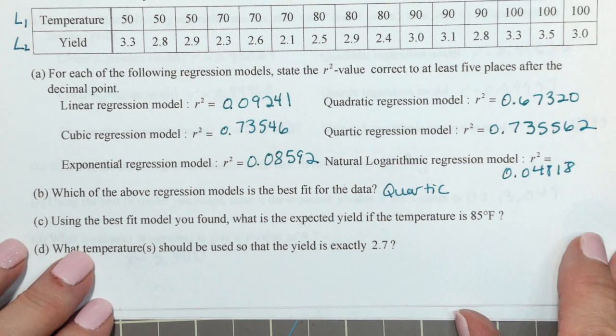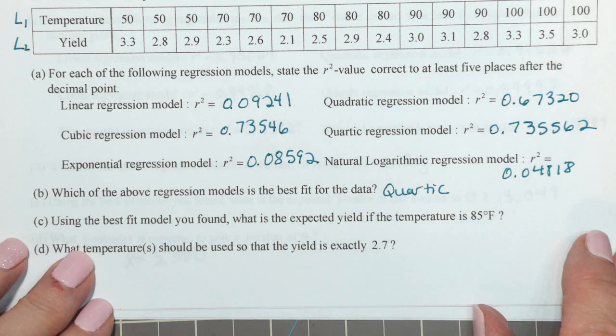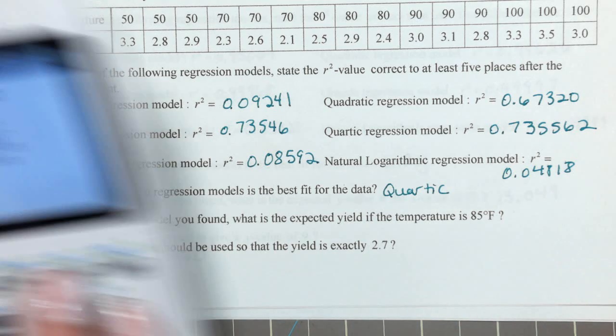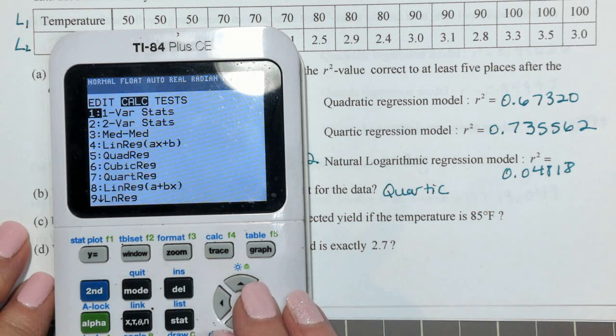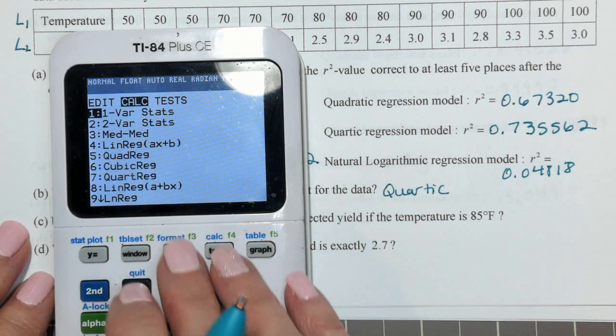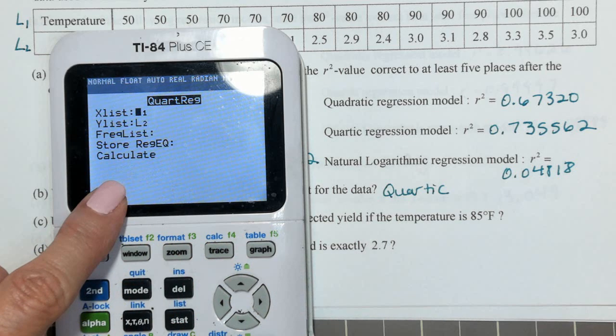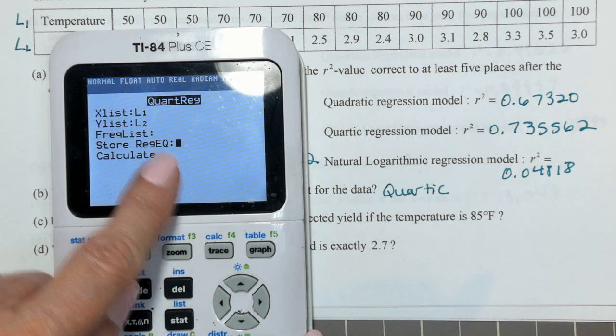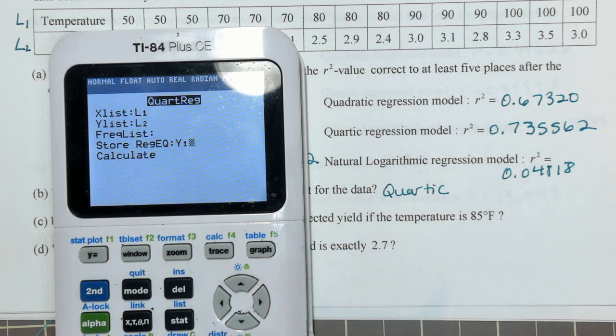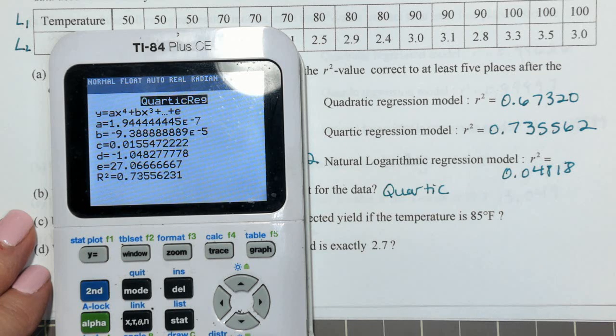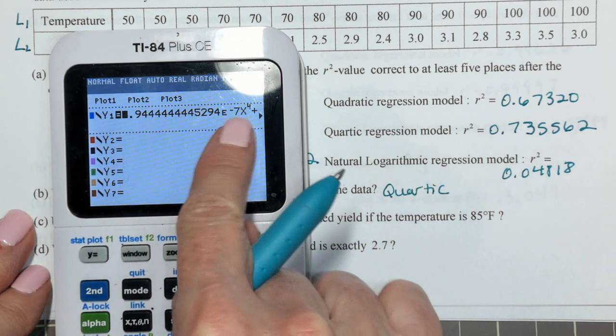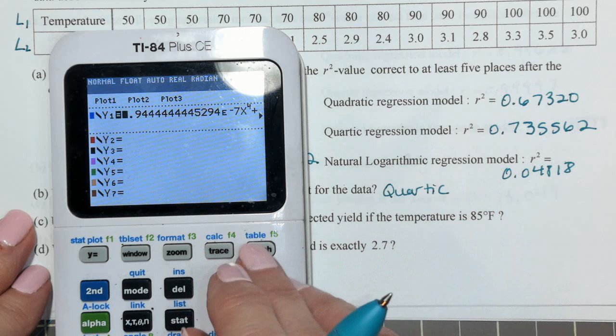Using the best fit model you found, what is the expected yield if the temperature is 85 degrees? So, I'm going to now go back to quartic, and I'm going to store it. This time, I'm going to store the equation in for Y1. That will allow me to complete this without going and typing those values in for Y1.